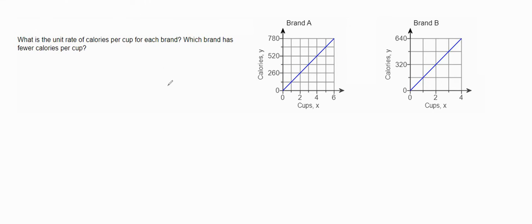And this last question, what is the unit rate? That means calories per cup for each brand, and which brand has fewer calories per cup. So if we look at brand A, we can go over here and look at a nice point. That's the point (2, 160). Note that again, it is proportional because it's a straight line that goes through the origin. And to find out what the unit rate would be, we're just going to take the y and divide it by the x. So this would be 260 calories divided by two cups, and that will be 130 calories per cup.